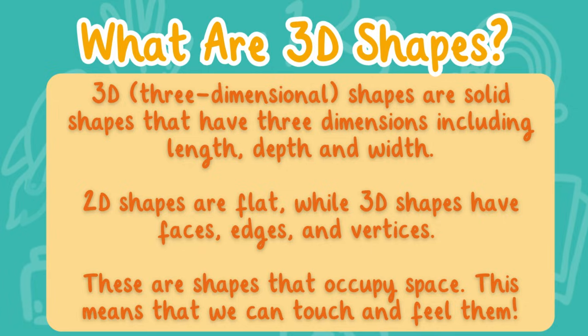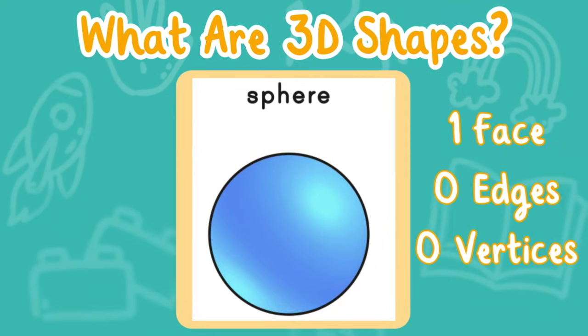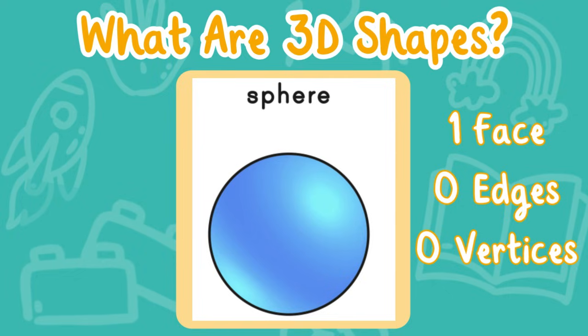Let's take a look at the shapes we're going to learn about today. First up is a sphere. A sphere has one big face, zero edges, and zero vertices.